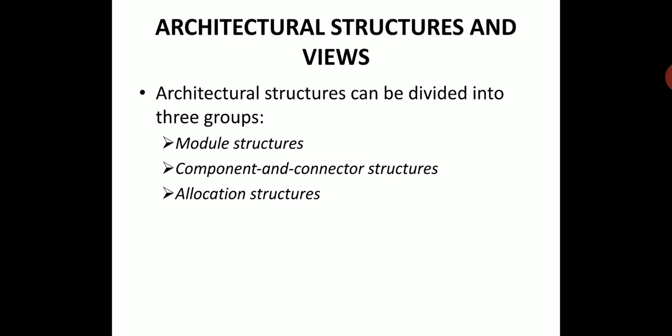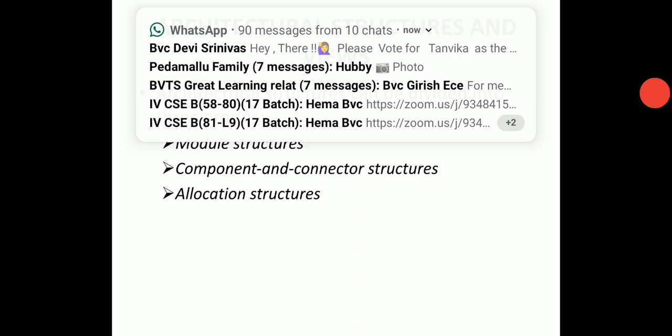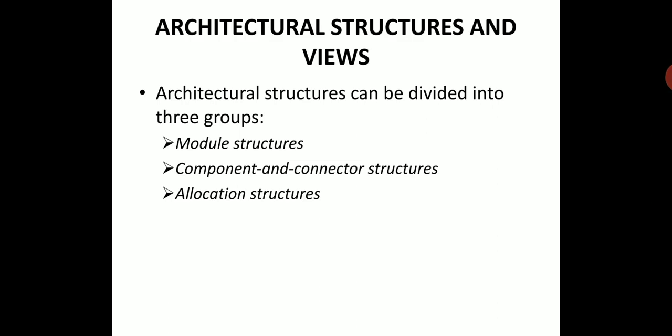The component and connector structure helps us answer questions like: what are the major executing components in the system and how they are interacting with each other, what are the major shared data sources and how they are being shared among all the elements, which parts of the system are being replicated, and which part of the system can run in parallel — concurrent execution. All these questions must be answered during this component and connector structure.